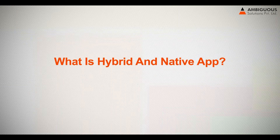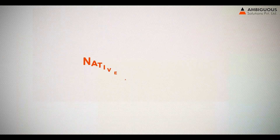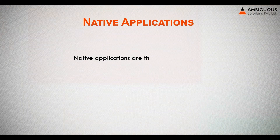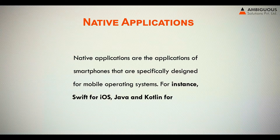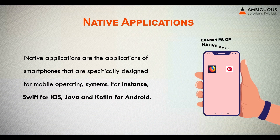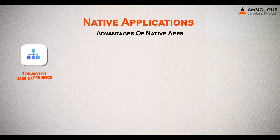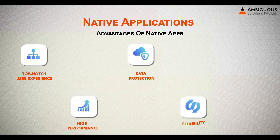What are hybrid and native apps, and what are the differences between them? Native applications are applications on smartphones that are specifically designed for mobile operating systems. For instance, Swift for iOS, and Java and Kotlin for Android. Advantages of native apps: one, top-notch user experience; two, high performance; three, data protection; four, flexibility.